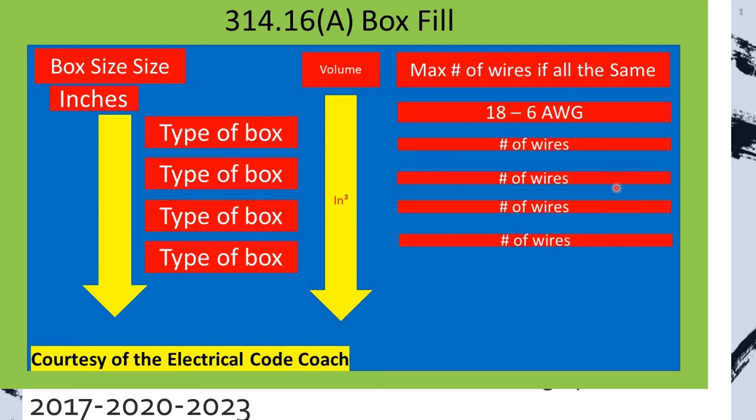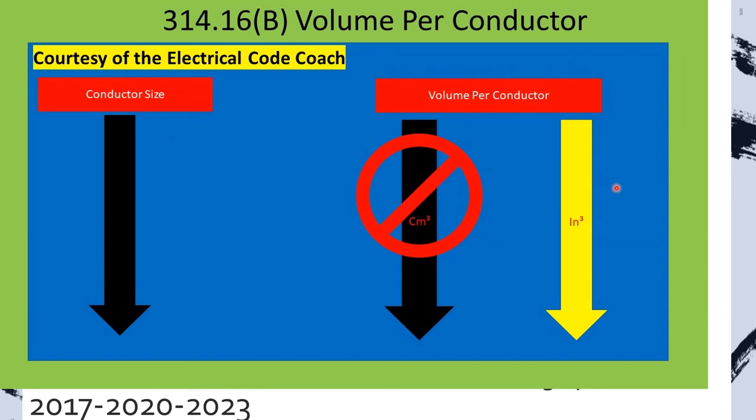Now let's look at the second table that we're going to be dealing with for box fill. And it's right below there. It's 314.16b. And this one's very simple to understand. On the left-hand side is our conductor size. And on the far right-hand side is going to be our cubic inch volume.